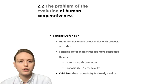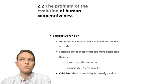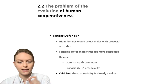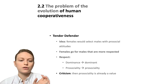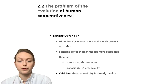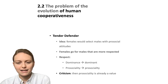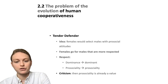Now we come to the tender-defender hypothesis: females would select males with more pro-social attitudes. We know that females go for males that are more respected, but we have to think about what that respect relies upon. If it relies upon dominance, then females would go after the more dominant male. If it relies upon pro-sociality, they would go after the more pro-social individuals. The criticism is that if they go after the more pro-social individuals, then pro-sociality is already of value — it doesn't really explain how cooperativeness can emerge in the first place. Pro-sociality seems to already be there.